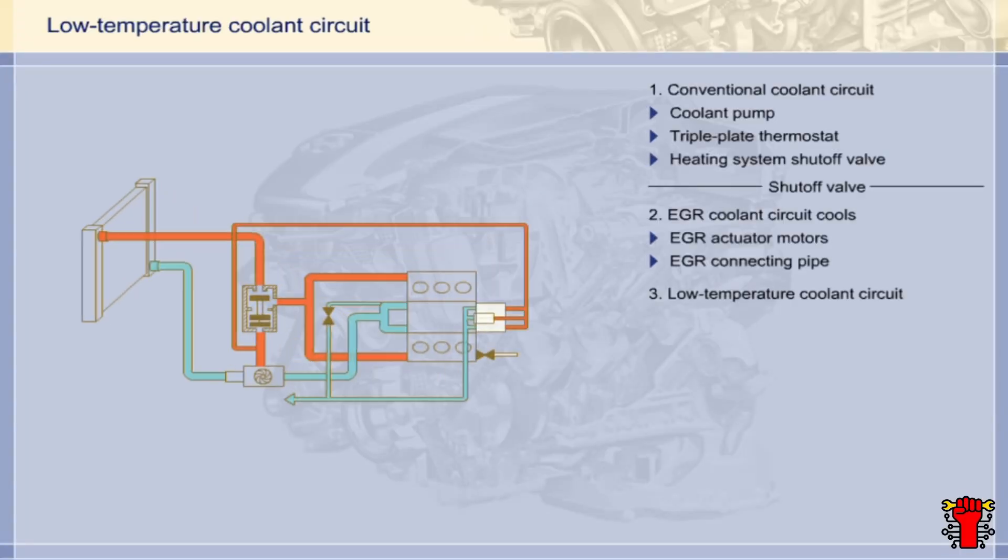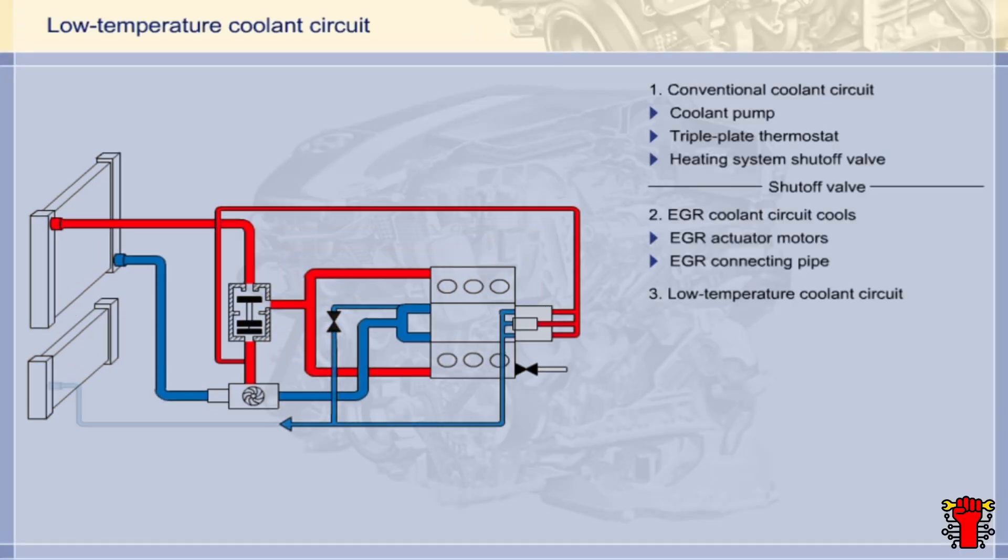The DE engine also has another circuit: the low-temperature coolant circuit. This helps to reduce the coolant temperature even further by means of a second radiator. The low-temperature coolant circuit is used to cool the engine control unit and the fuel.